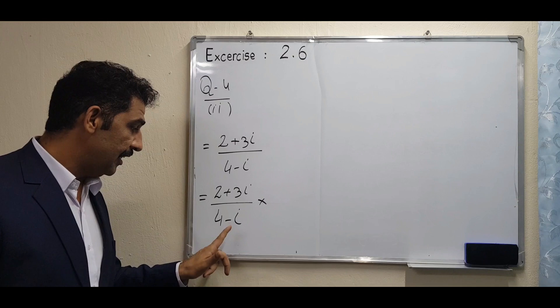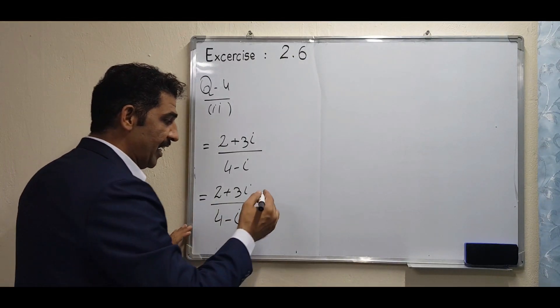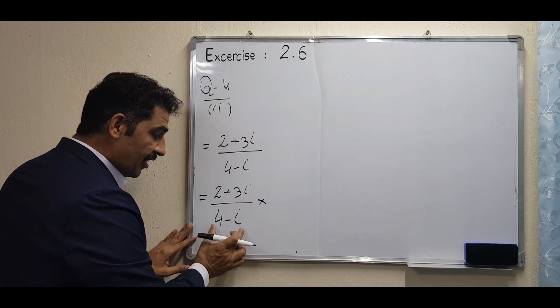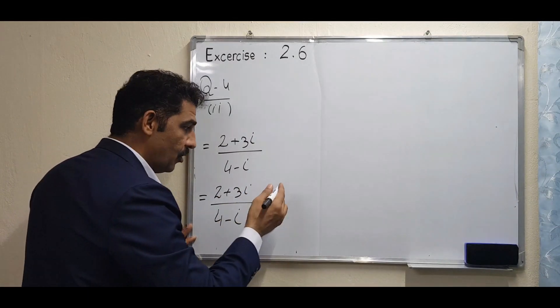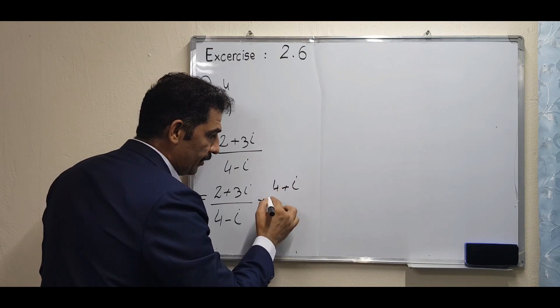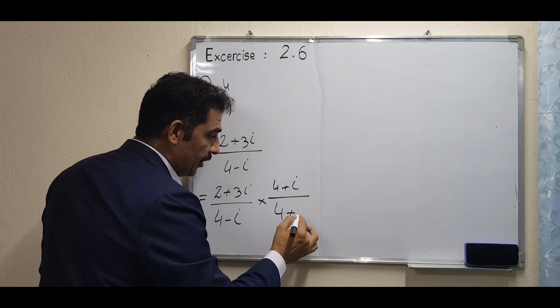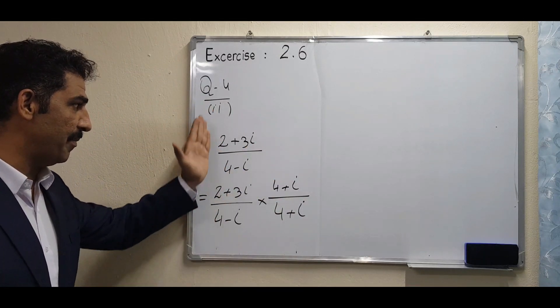What is the conjugate of 4 minus iota? Yes, good: 4 plus iota. When we write 4 plus iota multiplied and also divided, they will cancel, so the remaining previous term we can find.